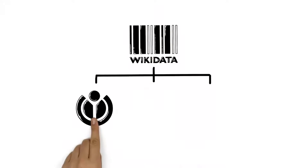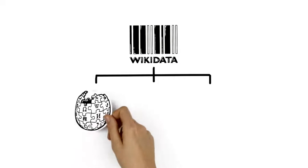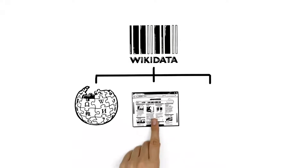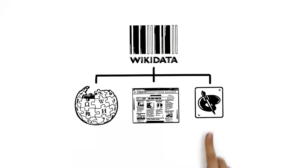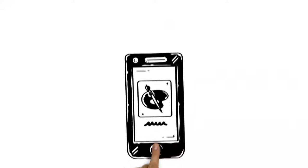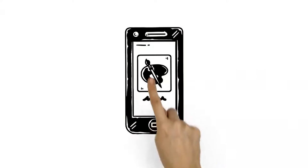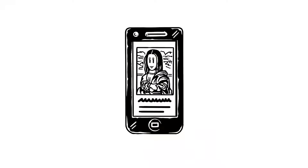Wikidata is used by the Wikimedia projects, such as Wikipedia, and also by many other websites and applications, like a mobile app that can give information on pieces of art around the user.